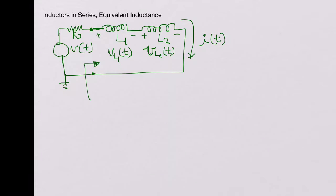So now if you write VL1 of t, which is L1 dI of t over dt, and then VL2, the voltage dropped across the second inductor, would be L2 dI of t over dt.